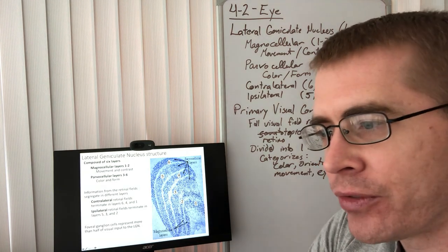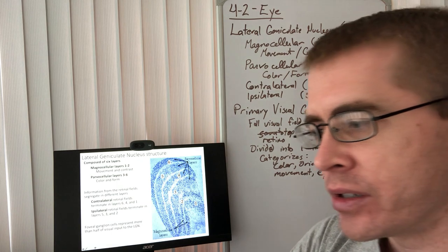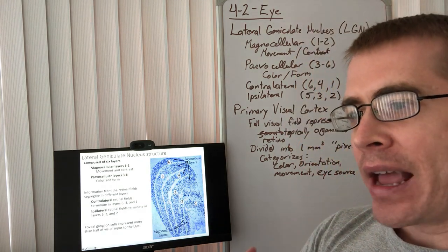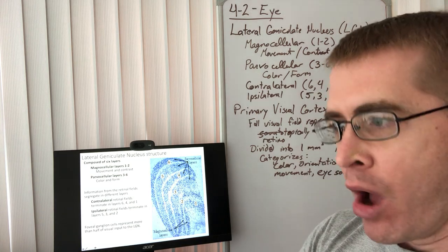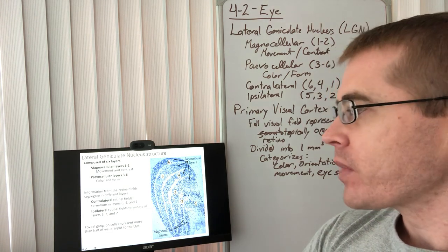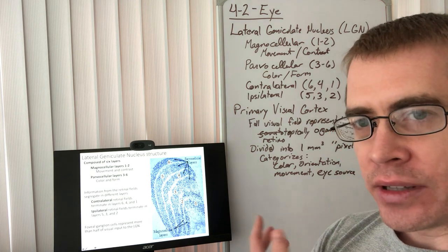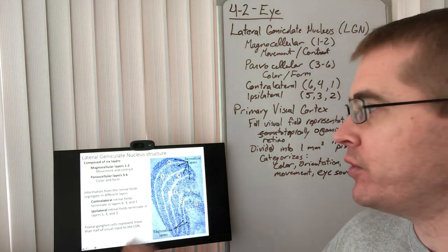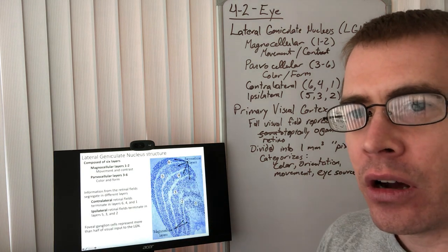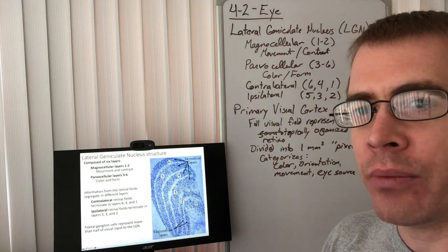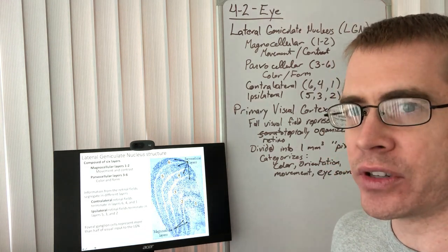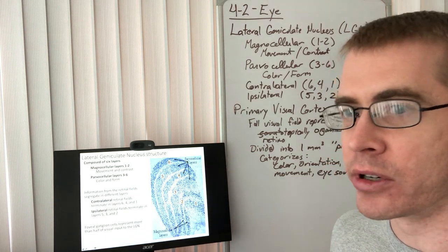The fovea is the highest area of visual acuity and has a large representation within the optic tracks and optic systems. About 50% of the cells within the LGN are processing information from the fovea centralis. That's how important the fovea centralis is compared to our peripheral vision.